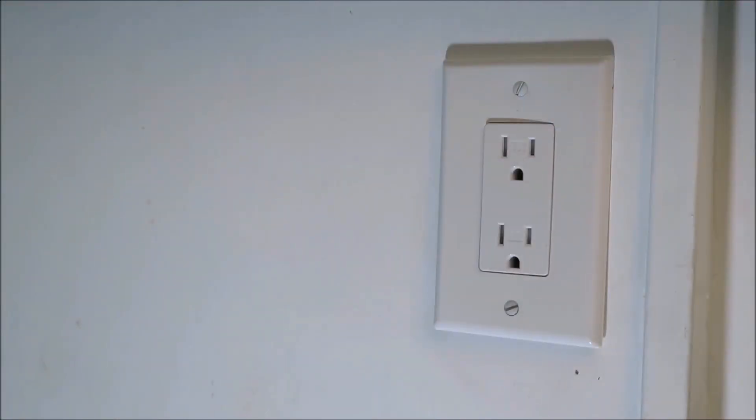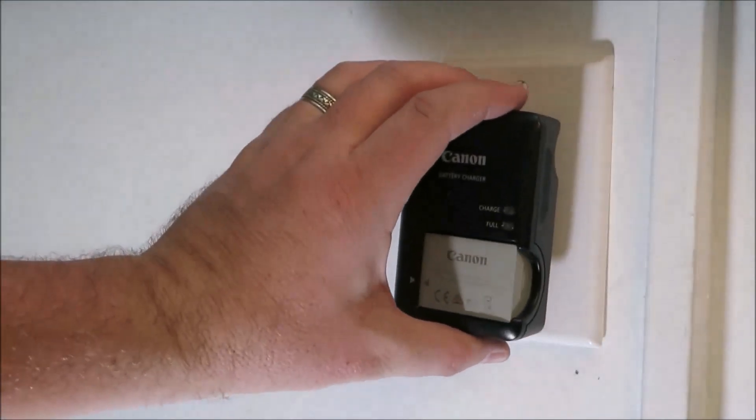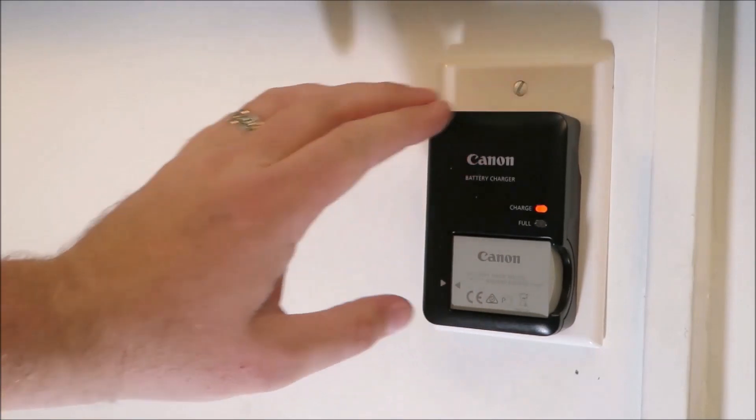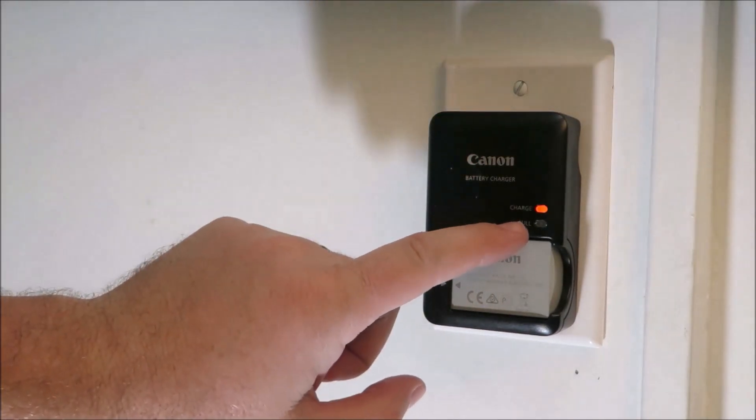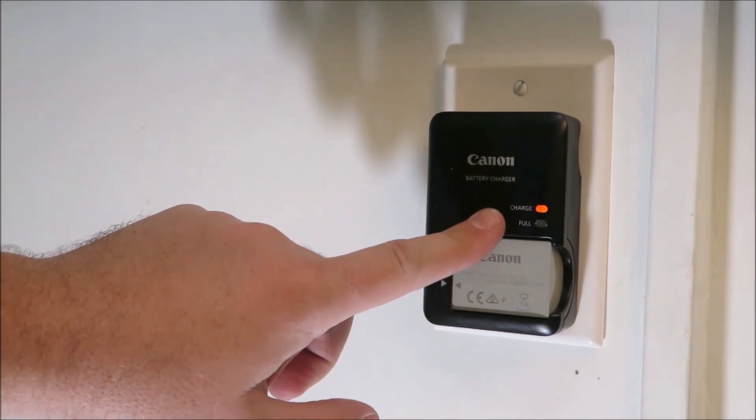So now that the circuit breaker is on, let's go ahead and plug something in to see that it's working. Good, we have an indicator light on here so it shows the flow of electricity.